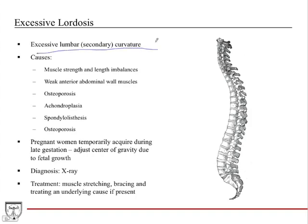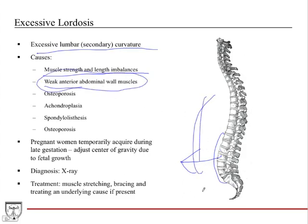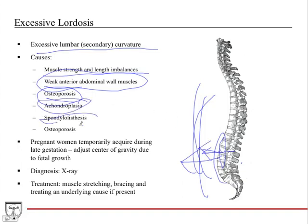Excessive lordosis is excessive lumbar or secondary curvature. Causes include muscle strength and length imbalances, and weak anterior abdominal wall muscles — many of which attach to the spine and help with posture. If they're weak, you'll have excessive lordosis. Osteoporosis can also result in instability causing the spine to project. Achondroplasia, spondylolisthesis, and osteoporosis — all diseases that affect bone stability can contribute.